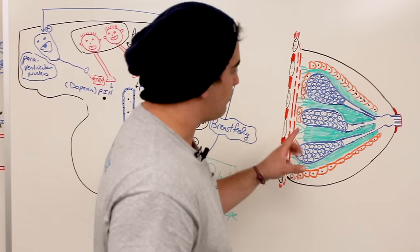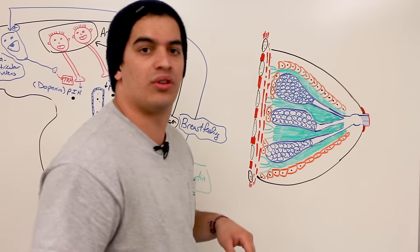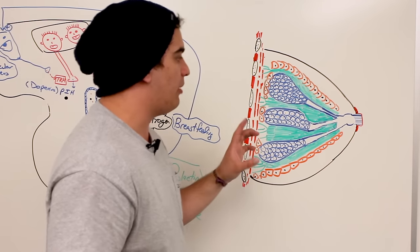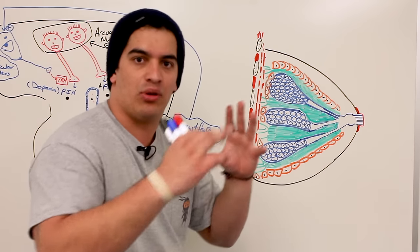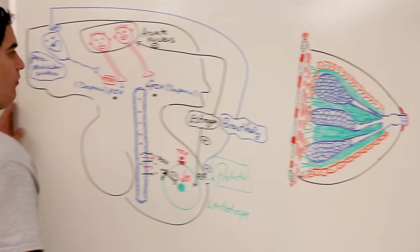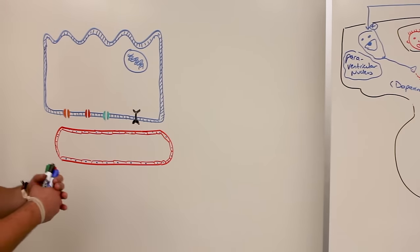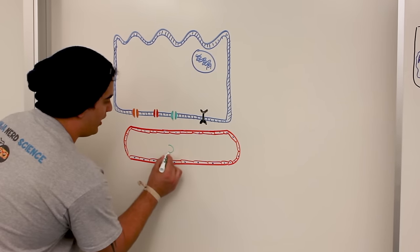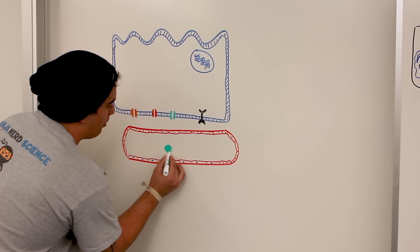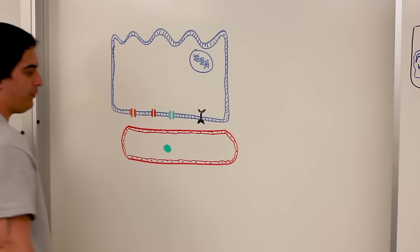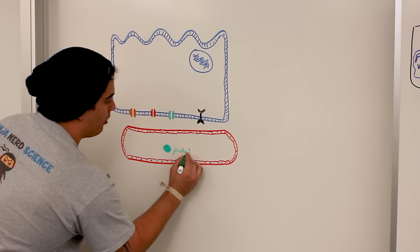Now let's come over to the mammary gland. There are alveolar cells that are making the milk. Let's zoom in on an alveolar cell and look more deeply at how prolactin works. Prolactin is circulating in the blood — represented here as a green dot — and it's being transported in the bloodstream to act on these alveolar cells, which are part of your mammary glands within your lobules.